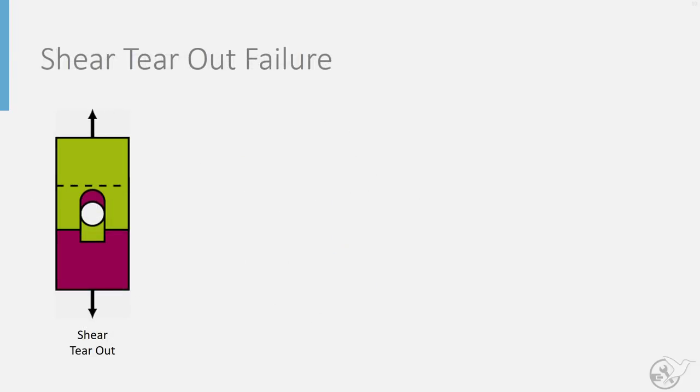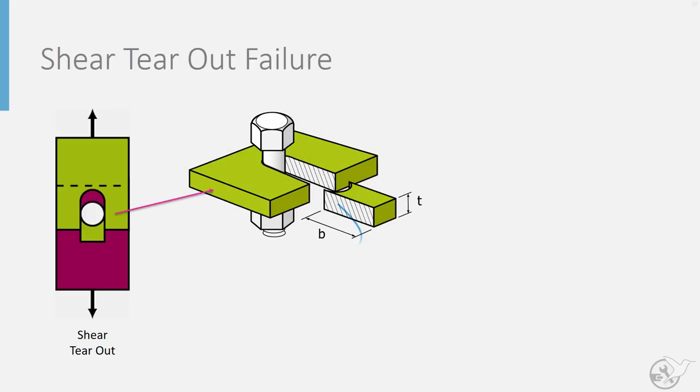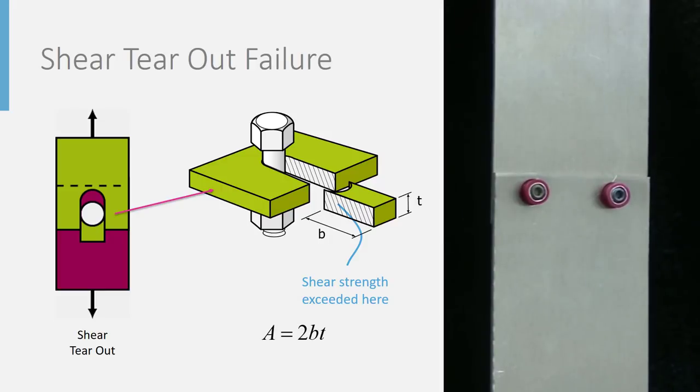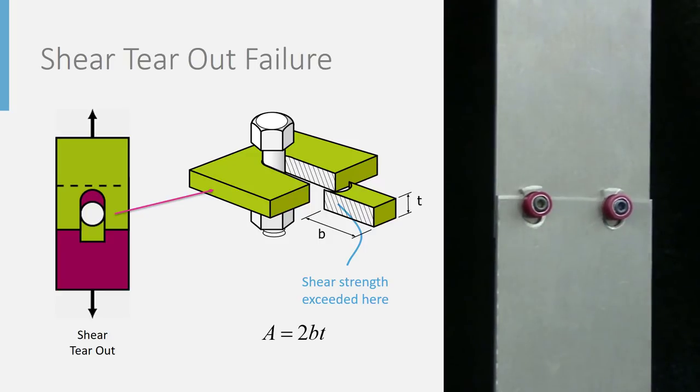If load passes the net section without failure, it has to flow around the fastener, creating a region of high shear on either side of the fastener. If the fastener is too close to the edge of the sheet, the area that can resist this shear load can be small enough that ultimate shear strength of the sheet material is reached. This results in a failure mode known as shear tear-out, where these high shear stresses effectively cause the fastener to tear a portion of the sheet completely out of the joint.